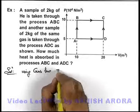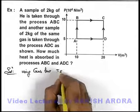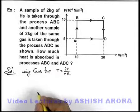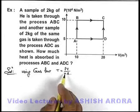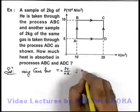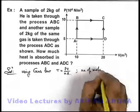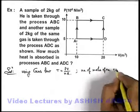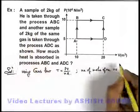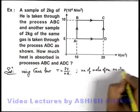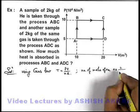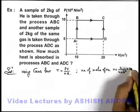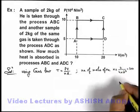By gas law, we can write the temperature of the gas in a state as PV upon nR. Now the very first thing we'll calculate is the number of moles. The number of moles of helium: total amount of gas is 2 kilogram, so it can be written as 2 divided by the molar mass of helium, which is 4 × 10⁻³, giving us 500 moles.